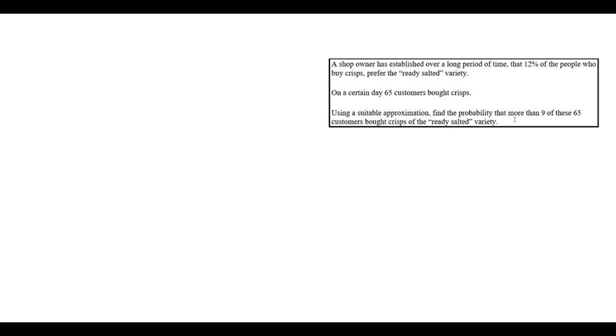On a certain day 65 customers come in and buy crisps. From reading there I know there's a fixed number of trials, 65, those are the customers on this day, and I know the probability that they successfully choose ready sorted crisps is 0.12. So that sounds like a binomial distribution.